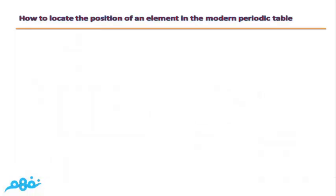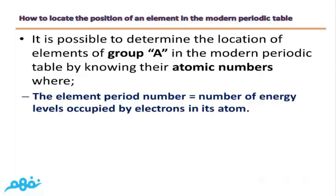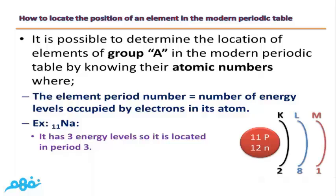Here is a very important exam question: how to locate the position of an element in the modern periodic table by knowing its atomic number only. It is possible to determine the location of group A elements only. The element's period number equals the number of energy levels occupied by electrons in its atom. For example, sodium has atomic number 11 and its electrons are distributed in three energy levels (2, 8, 1), so sodium is located in period three.